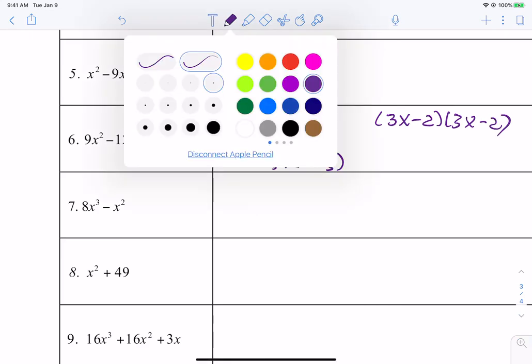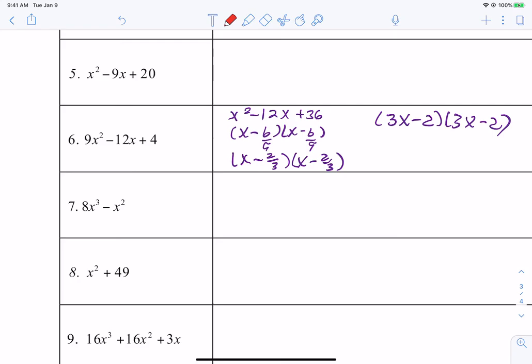So our final answer is going to be three X minus two times three X minus two. And you can check that it's right. It should be right if you foil it out and you get this nine X squared minus 12X plus four, which we do get. Anybody have any questions about number six?